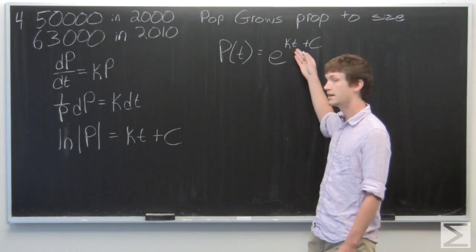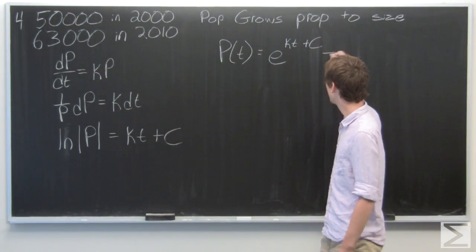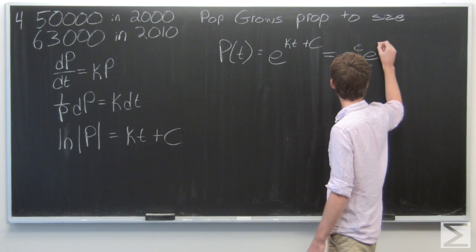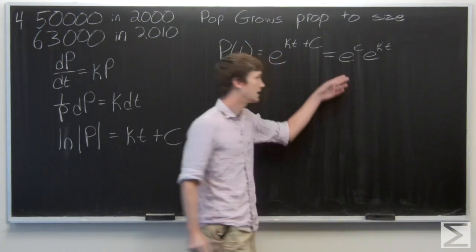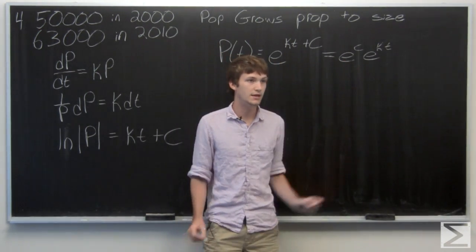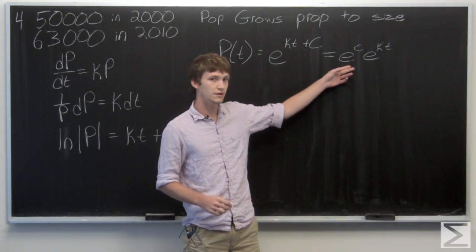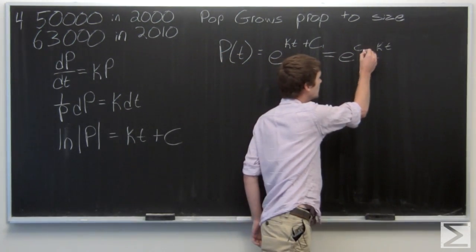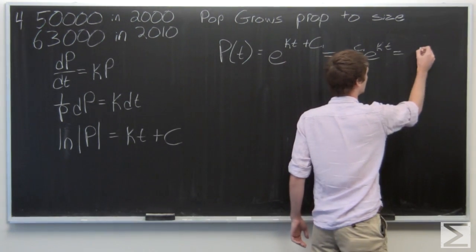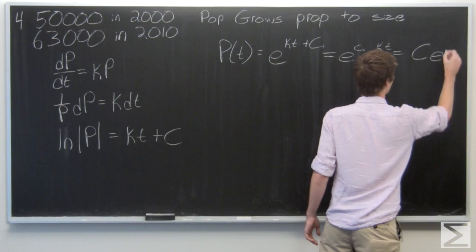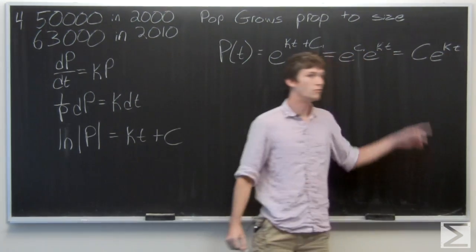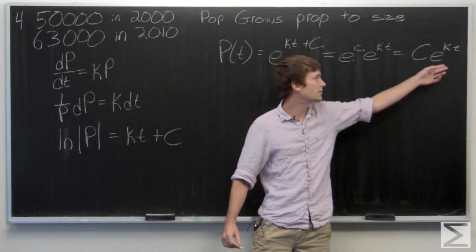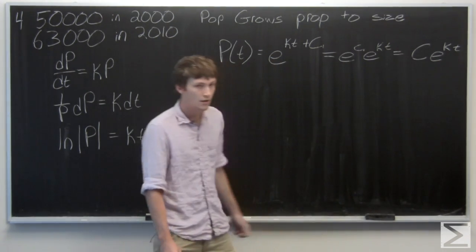Note that e to the kt plus c is the same as e to the c times e to the kt, and we can call this just a new constant, so I'll denote this one as c1. We get the population at any time t equals c times e to the kt. Now we're going to use our initial conditions.